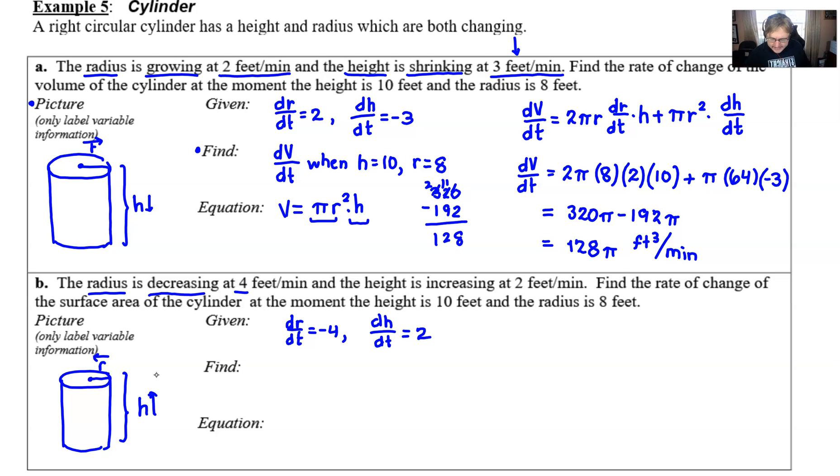Now what we're going to find here is the rate of change of the surface area. So I'm going to use capital S for surface area. You really can use anything that you want. And we're going to do this at the specific moment that height is 10 and radius is 8, which is what we had before in Part A.